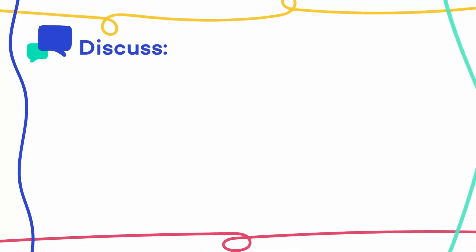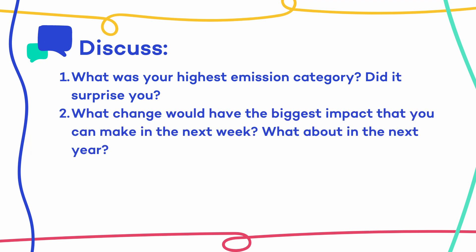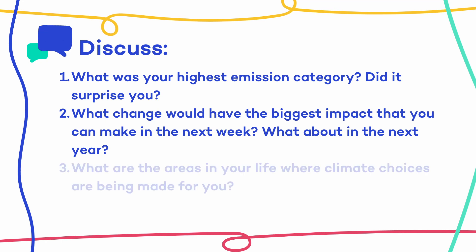Here are some discussion questions to talk about with your class or group. What was your highest category, and did it surprise you? What's one change you can make by next week that would have the highest impact on your footprint — and what about if you had a full year? What are the areas in your life where climate choices are being made for you?